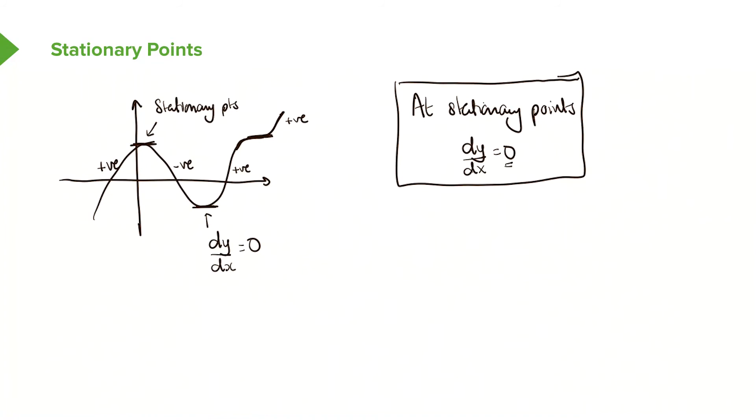The next thing you might notice is that these are different types of stationary points. If you observe closely, you'll see that you have a stationary point that looks like this. And a stationary point that looks like this. And a stationary point that looks like this.